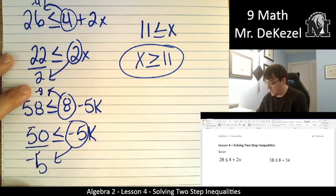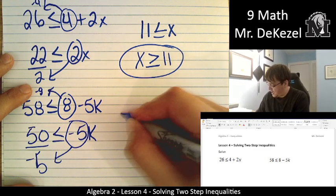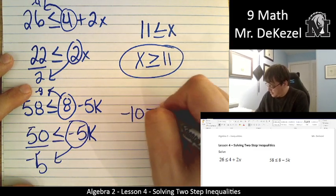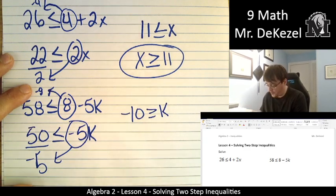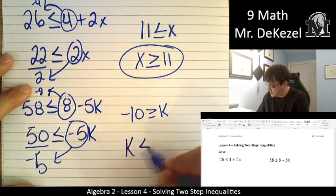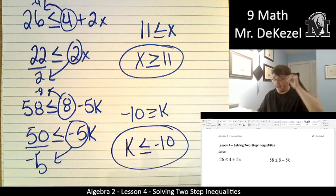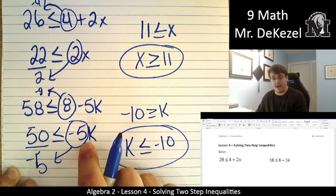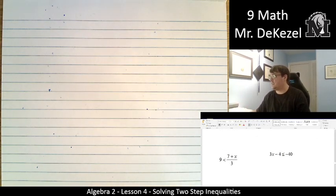So we're dividing by a negative, so that means that we are going to flip the sign. So we have minus 10 is greater than or equal to k. And then we're going to flip it back over because we want k on the left. So k is less than or equal to minus 10. And that is our final answer. And so when we multiply or divide by a negative number, we flip that sign. Let us continue.